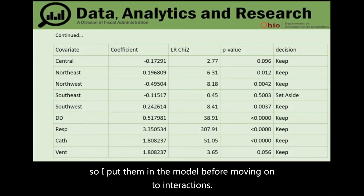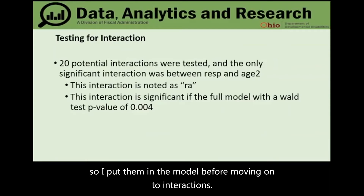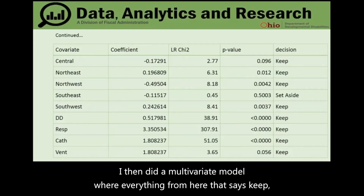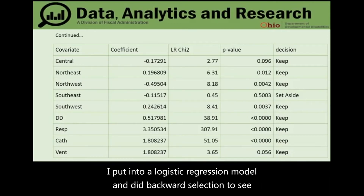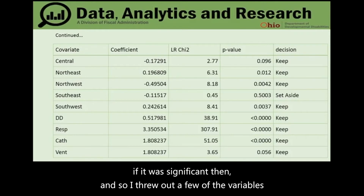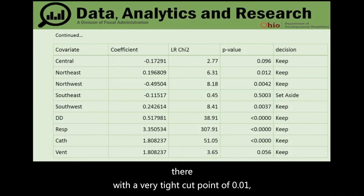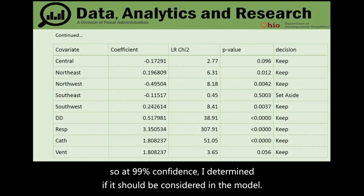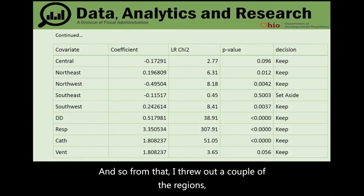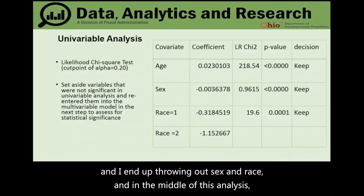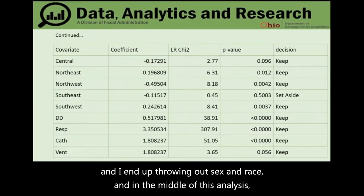DD, respiratory, catheter, and ventilators were all significant and put into the model. A multivariate logistic regression model with backwards selection was then run using all variables marked 'keep,' with a tight cut point of 0.01 — meaning 99% confidence. From that process, a couple of the regions were removed, and sex and race were thrown out as well.